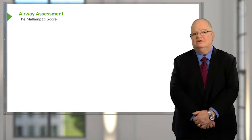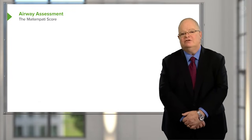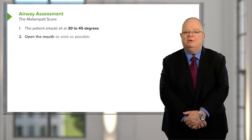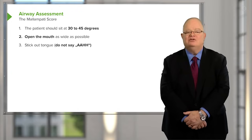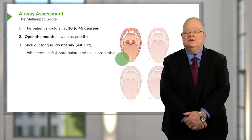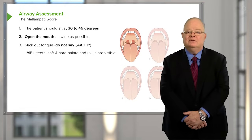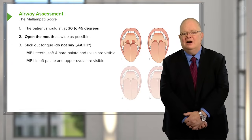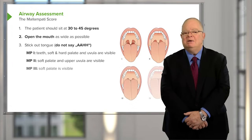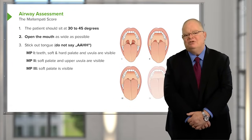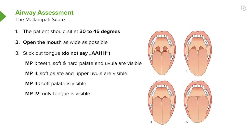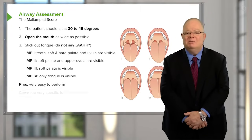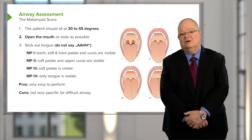Part of the airway assessment is to do a Mallampati score. The Mallampati score is extremely easy to do and everybody gets it done. Basically, the patient should be sitting between 30 and 45 degrees, open the mouth as wide as possible, and extend the tongue as far as possible — they should not say 'ah.' If it's a Mallampati 1, you can see all the teeth, the hard palate, the soft palate, and the uvula — you can see right into the oropharynx. Mallampati 2, the tip of the uvula gets cut off and it's a little harder to see the oropharynx, but you can still get a pretty good view. Mallampati 3, you've lost the uvula and can only see perhaps just a tiny bit of the oropharynx. In Mallampati 4, you basically see tongue and very little else. It's an incredibly easy test to perform and everybody gets it done. The problem is it isn't very sensitive, and it doesn't really tell us very often that we're going to have problems.